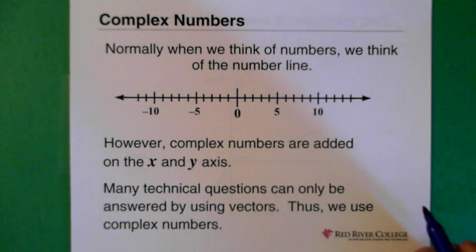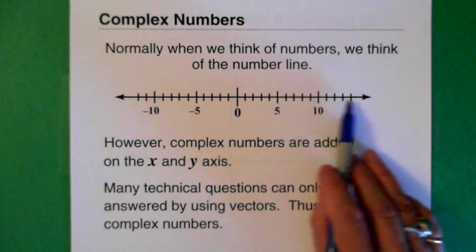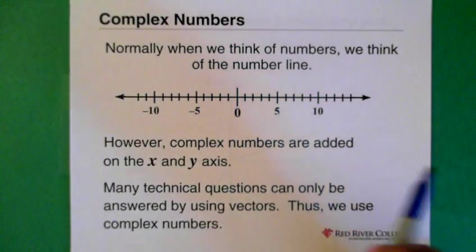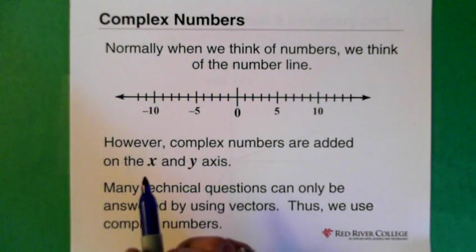So I want to just explain the basics of it. Normally when we're thinking about numbers, we're usually thinking about the number line. And we know that in the number line we have positive numbers and we have negative numbers. It's just essentially a straight line.